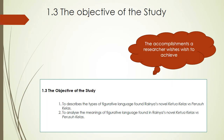Research objectives describe concisely what the research is trying to achieve. They summarize the accomplishments a researcher wishes to achieve through the project and provide direction to the study. A research objective must be achievable, framed keeping in mind the available time, infrastructure, and other resources. Before forming a research objective, you should read about all the developments in your area of research, find gaps in knowledge that need to be addressed, and this will help you come up with suitable objectives for your research project.